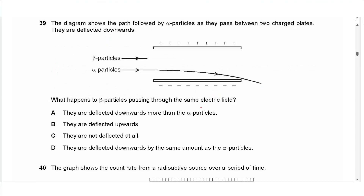Question 39: Alpha particles passing between charged plates are deflected downwards. Alpha is positively charged; beta is negatively charged. Beta particles would be deflected towards the positive plate — in the opposite direction to alpha. So beta particles are deflected upwards. Answer is B.